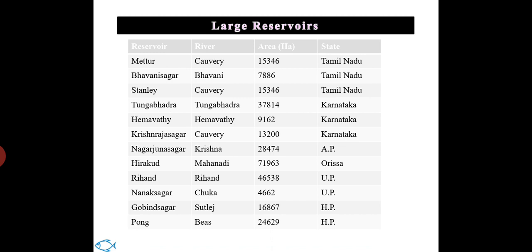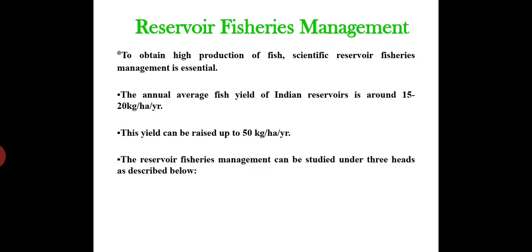Here is a list of some important large reservoirs in India from different states. Mettur, Bhavanisagar, and Stanley are from Tamil Nadu. Tungabhadra, Hemavathi, and Krishnarajasagara are from Karnataka. Nagarjuna Sagar, constructed across the river Krishna, is from Andhra Pradesh. Hirakud, the largest earthen dam across the Mahanadi, is from Odisha. Rihand and Nanak Sagar are from Uttar Pradesh, and Gobind Sagar and Pong are from Himachal Pradesh.